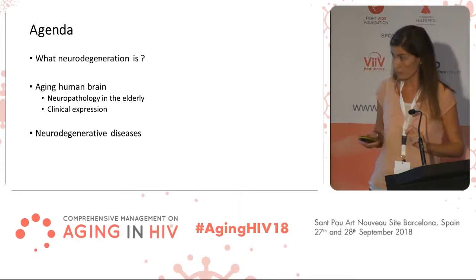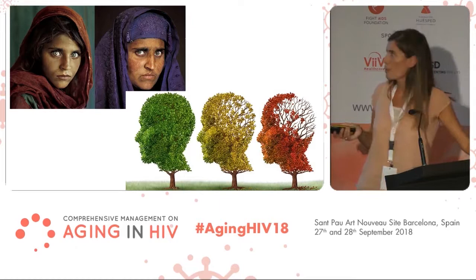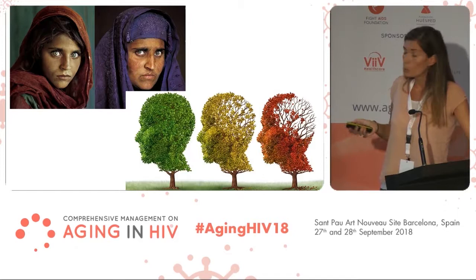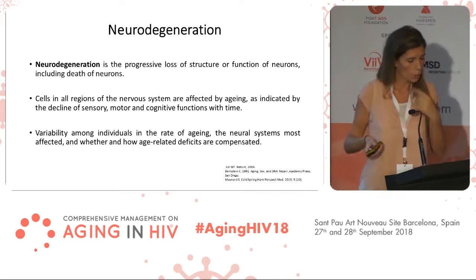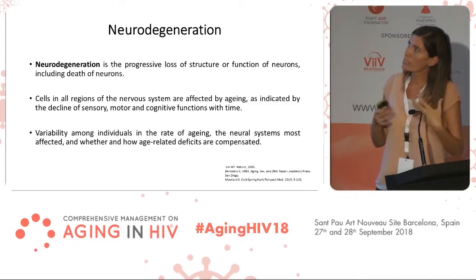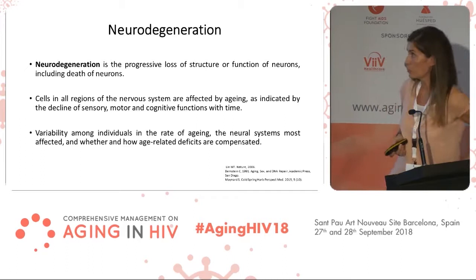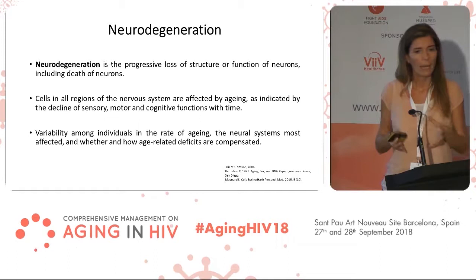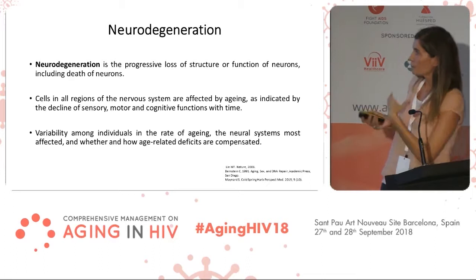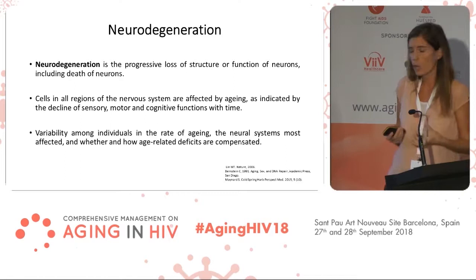We all get older. Even this beautiful girl — probably you remember her, she was the cover of the National Geographic Journal some years ago. And our brain also gets older. Neurodegeneration is the progressive loss of function of neurons, including the death of neurons. All the cells in the central nervous system are affected by age, but there is a huge variability between people, between cells, and in how people compensate the deficits of senescence in the brain.